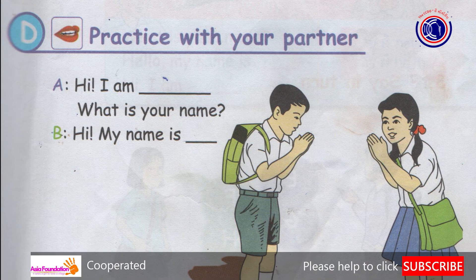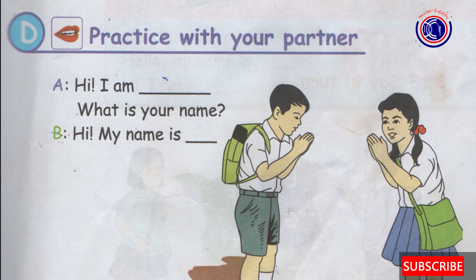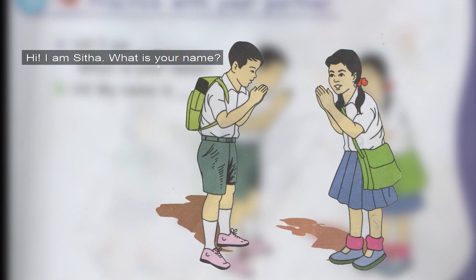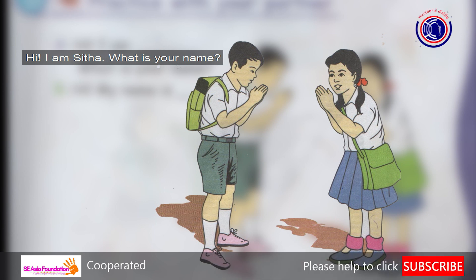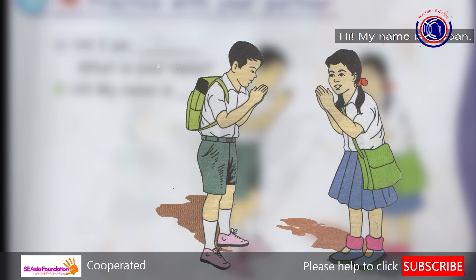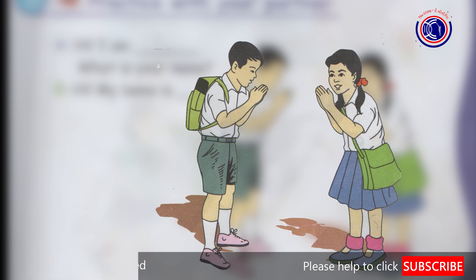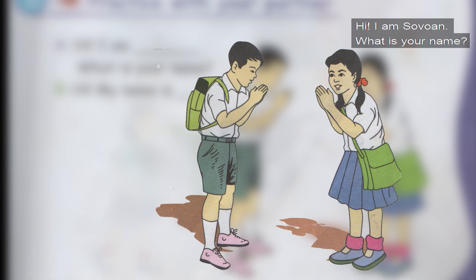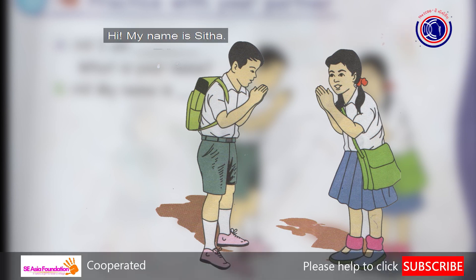Part D. Practice with your partner. Hi, I am Sita. What is your name? Hi, my name is Sovon. Let's switch. Hi, I am Sovon. What is your name? Hi, my name is Sita.